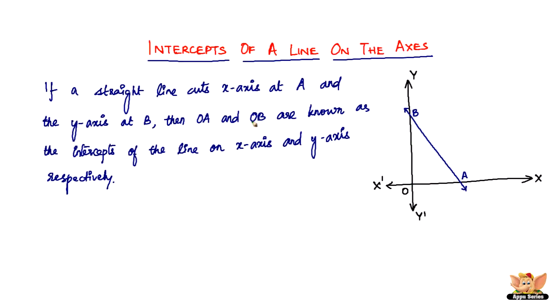OA and OB are known as the intercepts of the line on the x-axis and the y-axis respectively. So OA becomes the x-intercept and OB becomes the y-intercept.